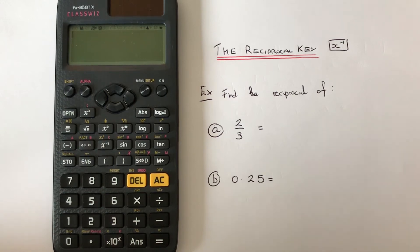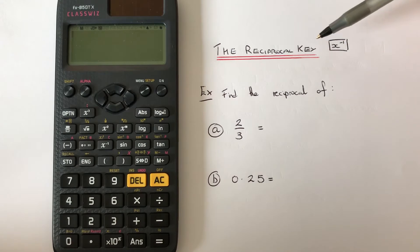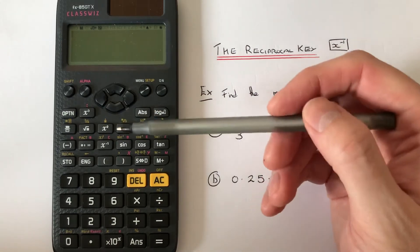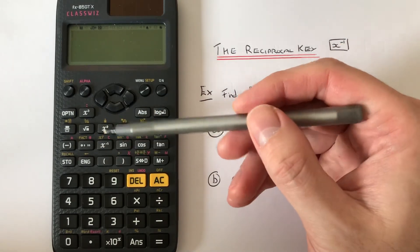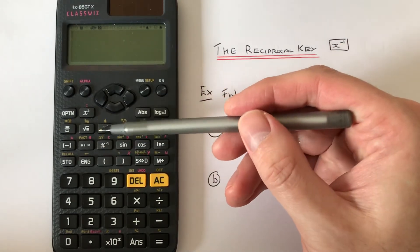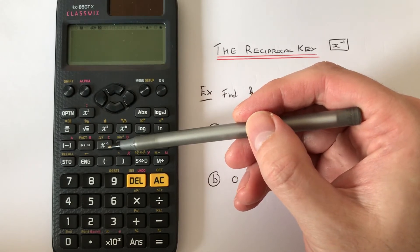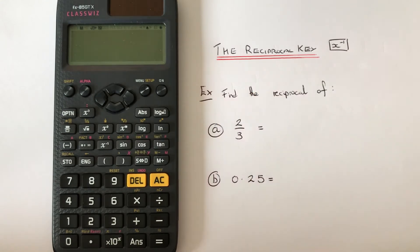Hi guys, welcome back. This is Maths 3000. Today I'm going to show you how to use the reciprocal key on a Casio Classwiz scientific calculator. The reciprocal key can be found on the third row of the scientific functions — it's this key here: x to the power of minus one.